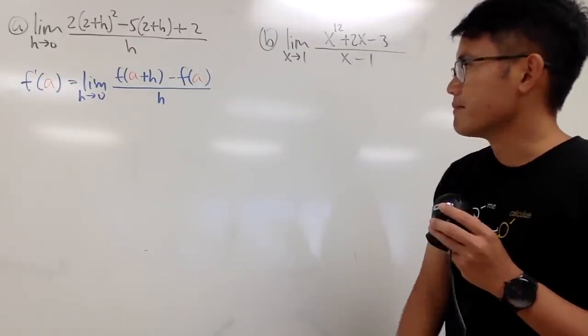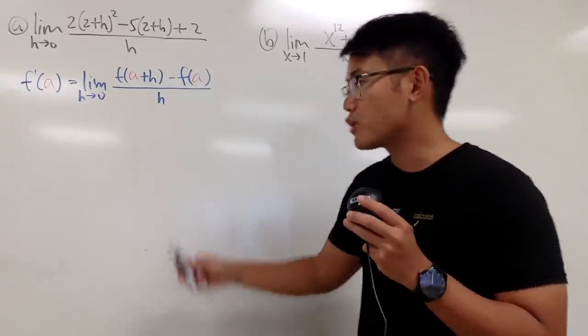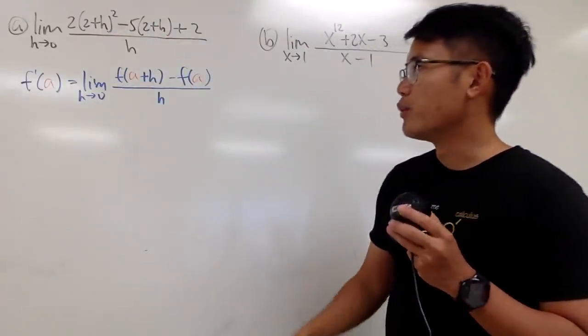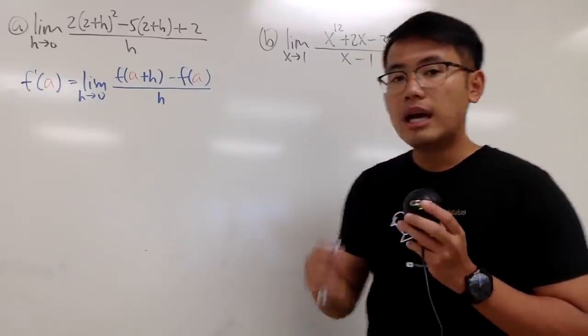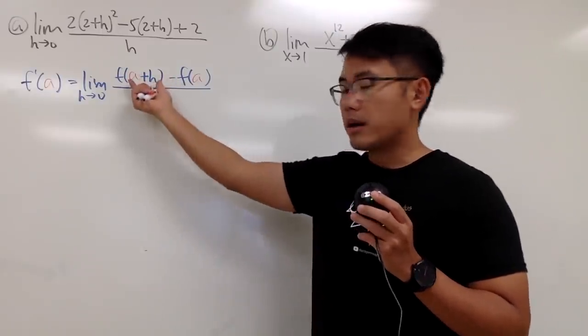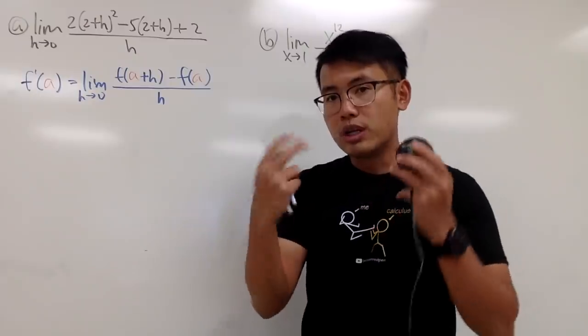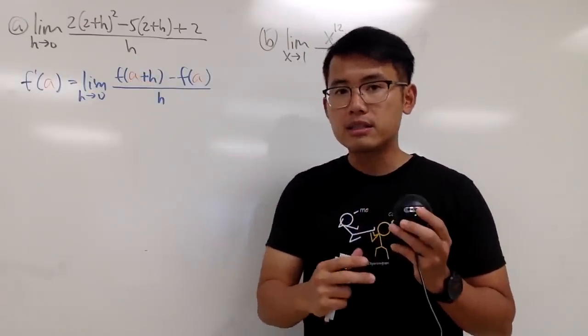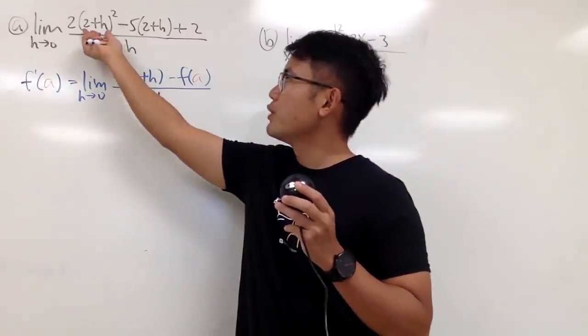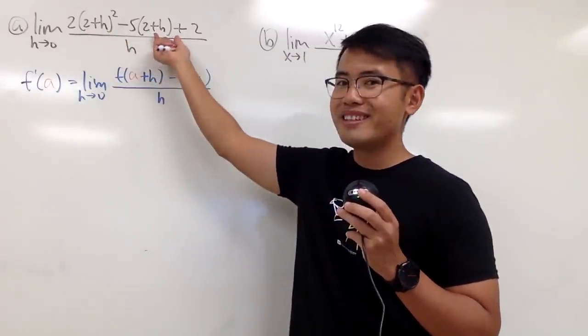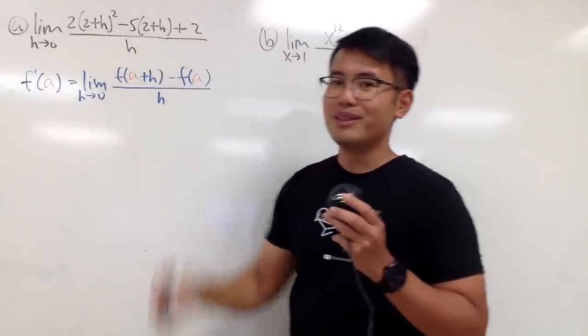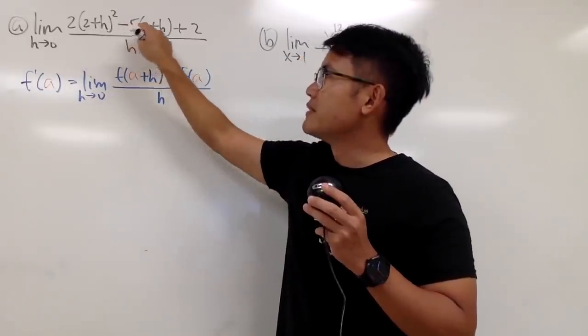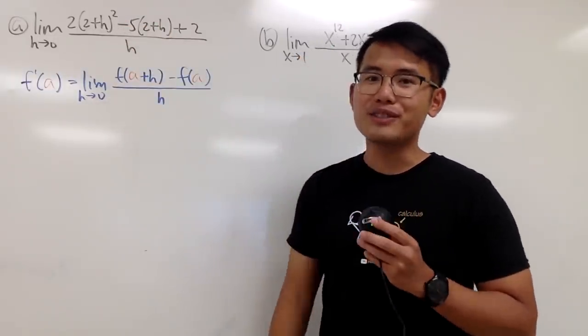Alright. Our goal is actually just try to identify what function we are talking about, and what the a value is. That's all, right? And look at this part. Before, when you are given function, you will just have to plug in a plus h into all the x. And now you see we have the 2 plus h here, 2 plus h here. They are the input, aren't they? So you can expect you have 2x squared minus 5x. That's actually the function, right?